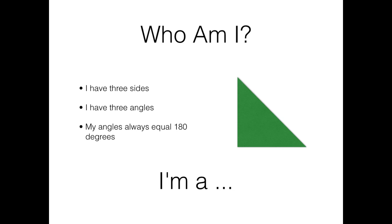G'day! Who am I? I have three sides. One, two, three. I have three angles. These two are equal. This one's a right angle. My angles always equal 180 degrees. I'm a triangle.